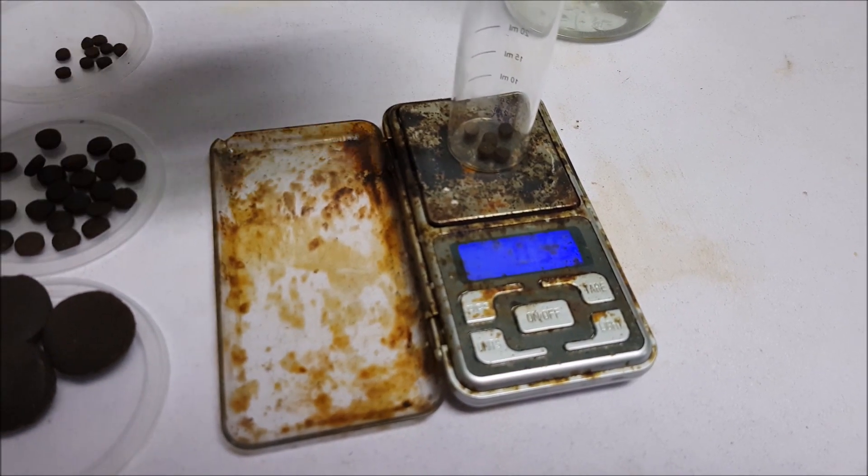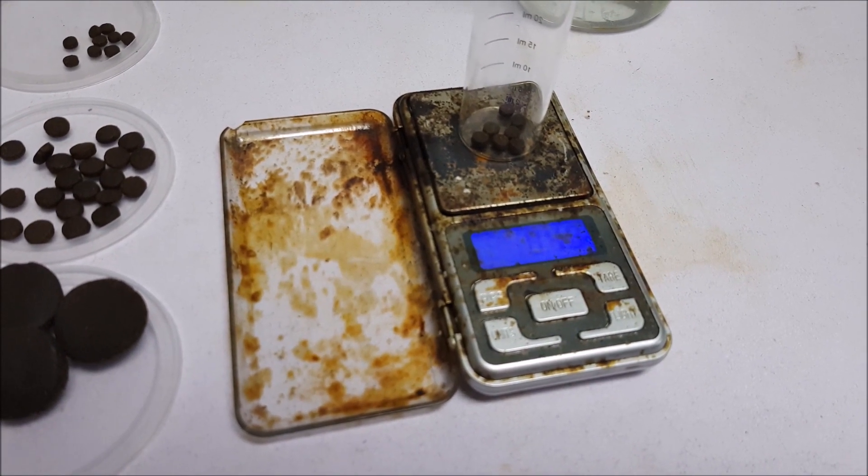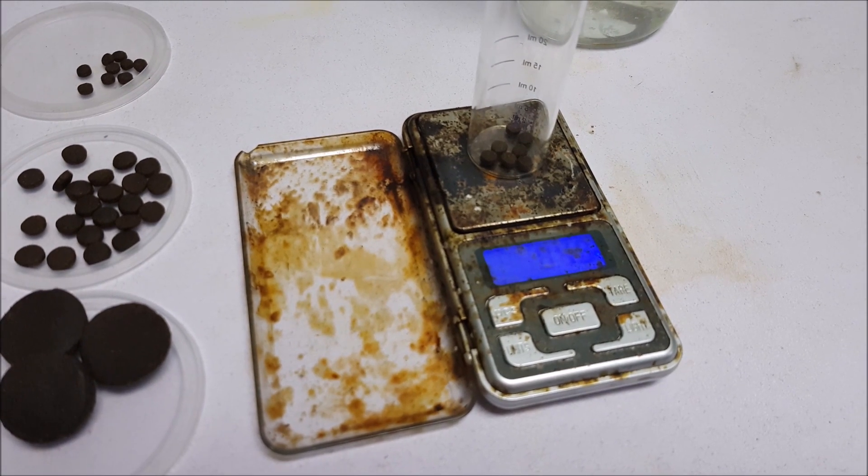Seven of them should make about 0.5g, so 14 of these small pellets will make about 1g.